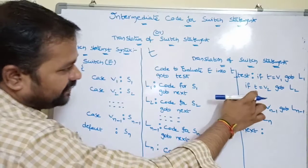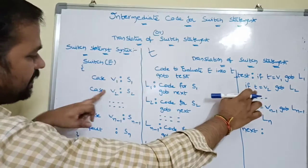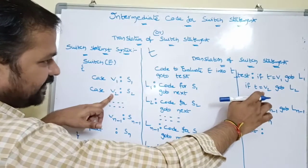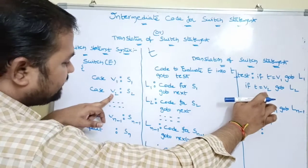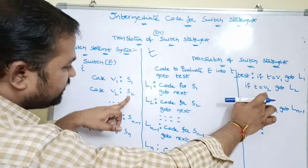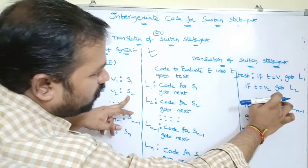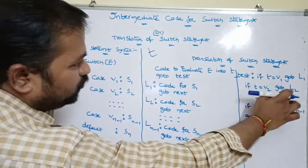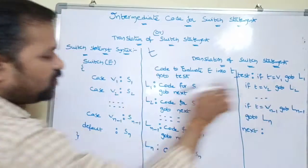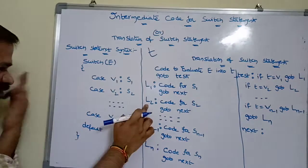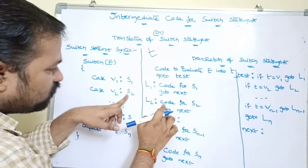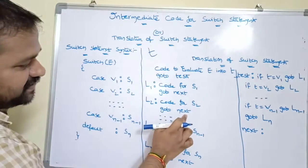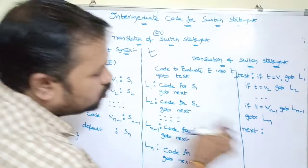If t equals v2, we execute s2. The code for s2 is available at label L2, so 'goto L2' is used. Control goes to L2, executes the code for s2, then 'goto next' transfers control to the next label.